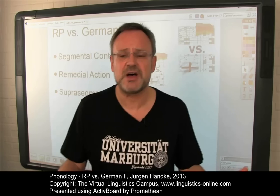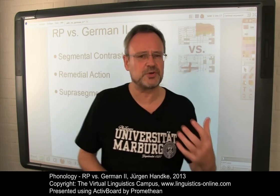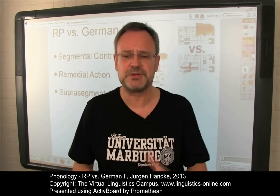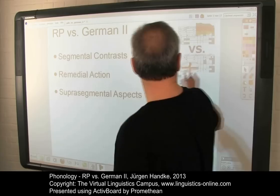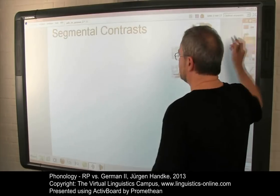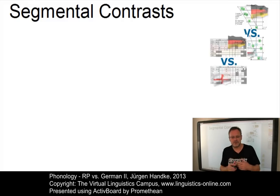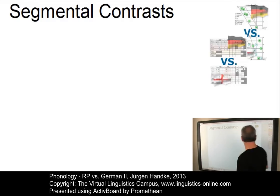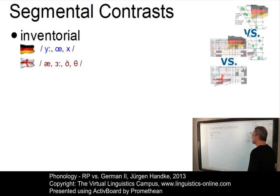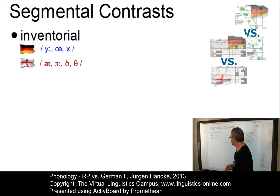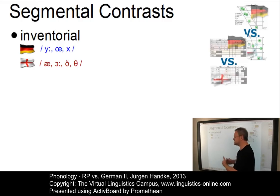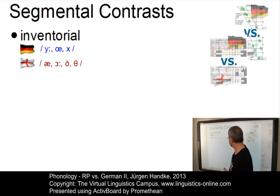Let us start with the systematic repetition of the contrasts between the two sound systems. In RP versus German 1, we categorized the following segmental contrasts. For example, inventorial contrasts — that is, phonemes that exist only in either of the two languages.